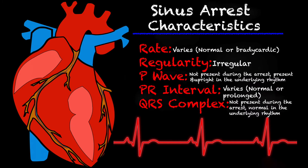Taking a look at some of the characteristics of sinus arrest, the rate is going to vary — it just depends on what the rate of the underlying rhythm is, so it could be normal or it could be bradycardic. It is an irregular rhythm, and whenever you take a look at it on a strip you'll know exactly why. Something different about sinus arrest is that it has a moment of a flat line on a strip or an EKG.